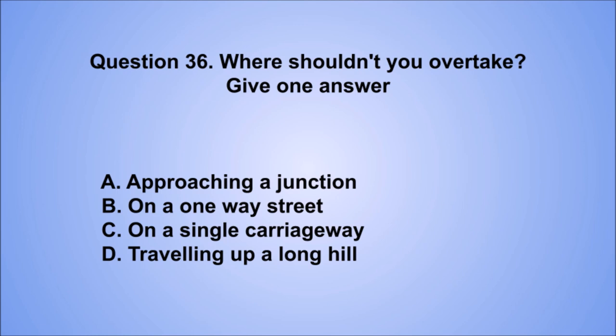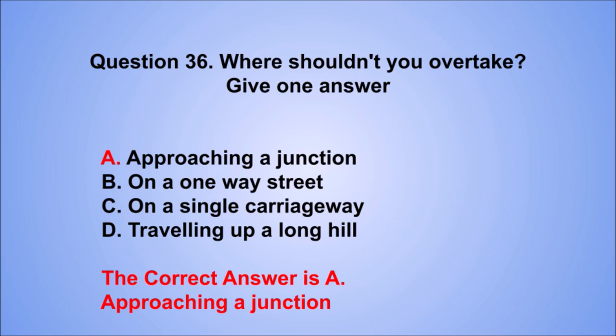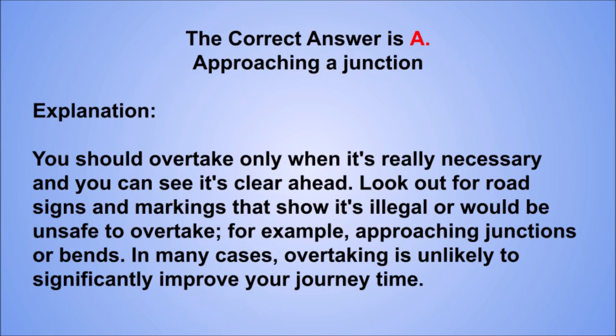Question 36. Where shouldn't you overtake? Give one answer. A. Approaching a junction. B. On a one-way street. C. On a single carriageway. D. Traveling up a long hill. The correct answer is A, approaching a junction. You should overtake only when it's really necessary and you can see it's clear ahead. Look out for road signs and markings that show it's illegal or would be unsafe to overtake, for example, approaching junctions or bends. In many cases, overtaking is unlikely to significantly improve your journey time.